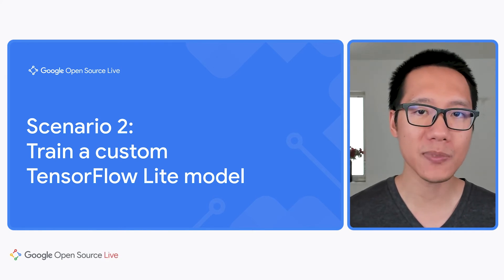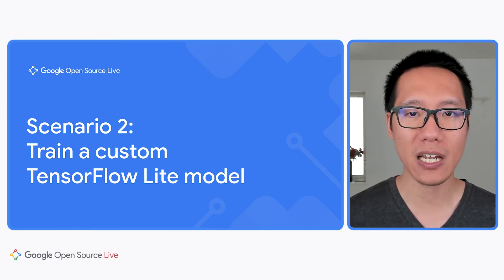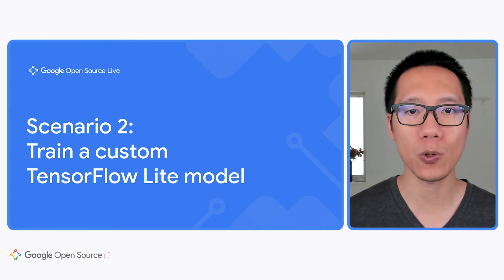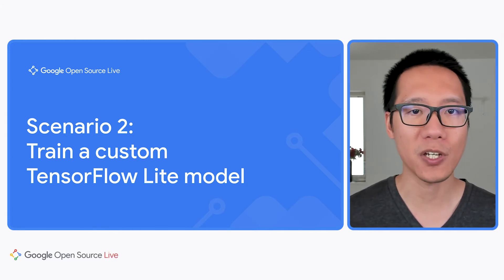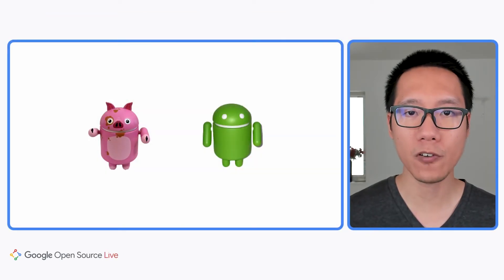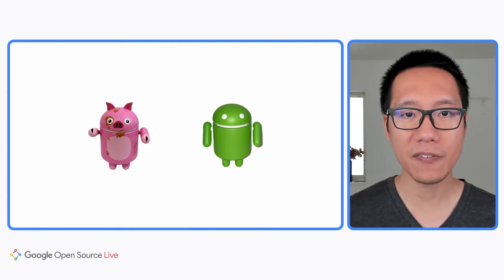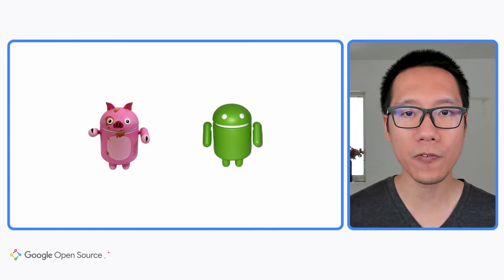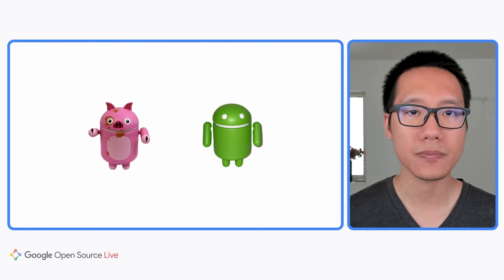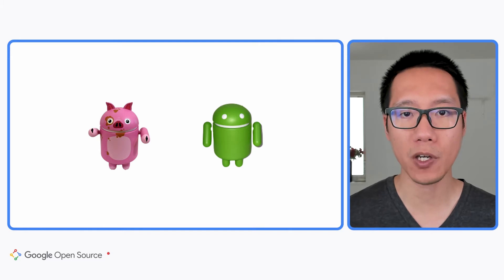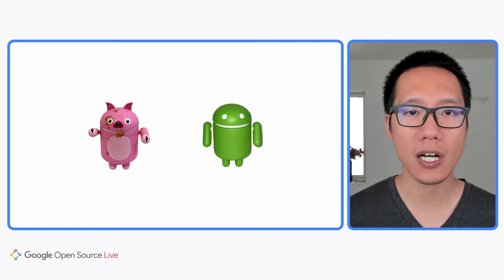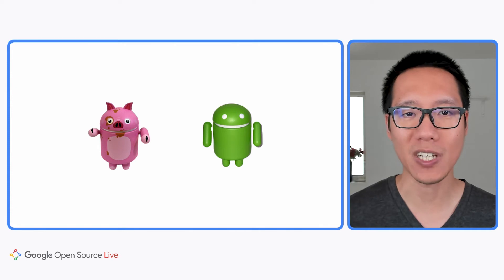However, there are many times you may want to do something not supported by the pre-trained models, so that's when you need to train a custom model. For example, the pre-trained object detection model can recognize 70 types of objects, but it can't recognize the Android figurines I have. So if I want to build an app to recognize these Android figurines, I'll need to train a custom model.